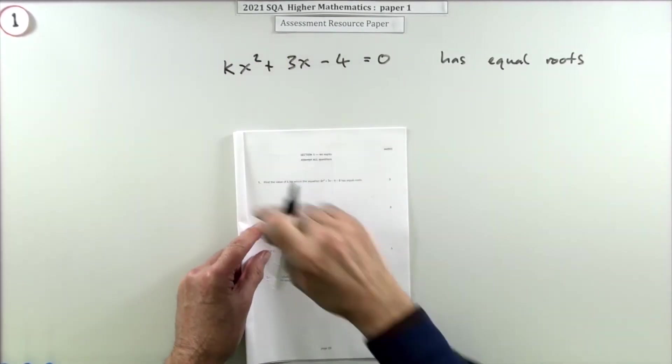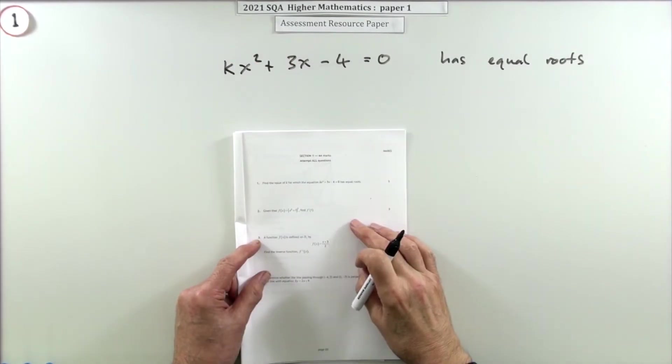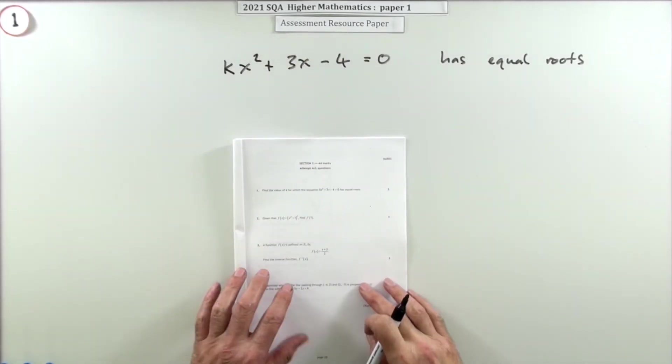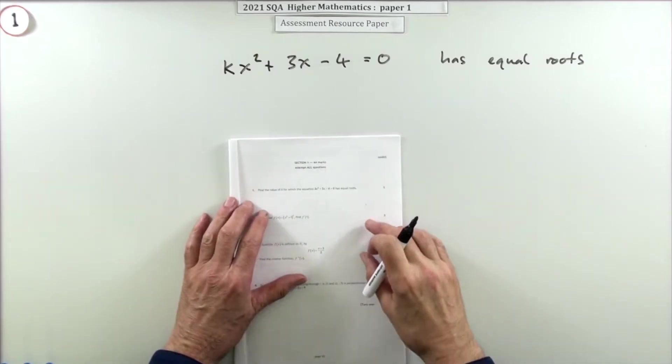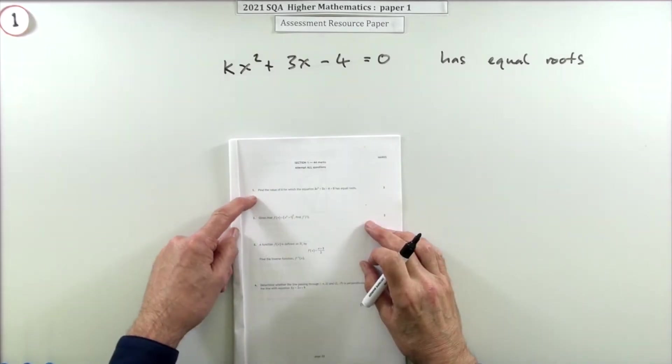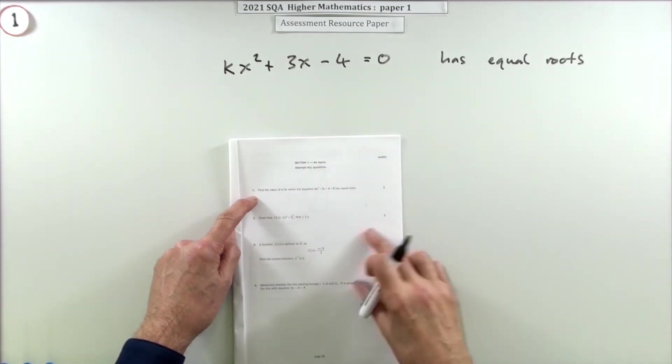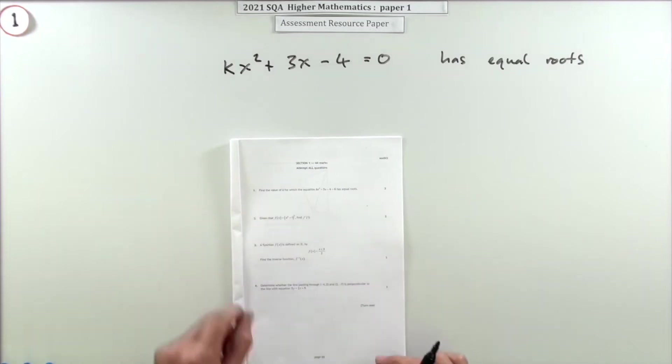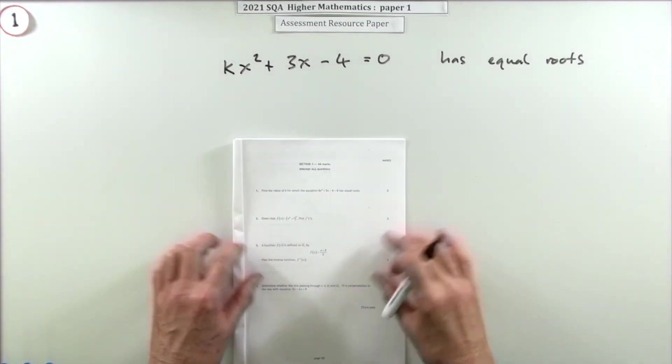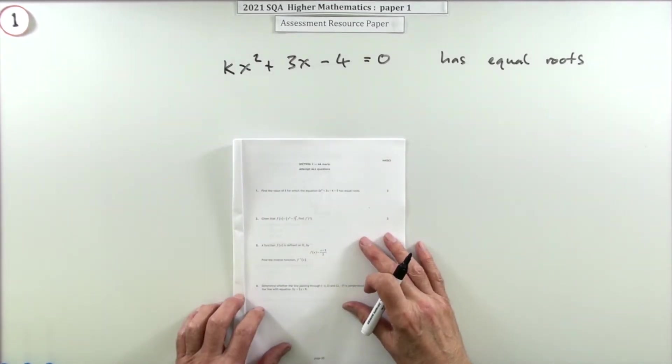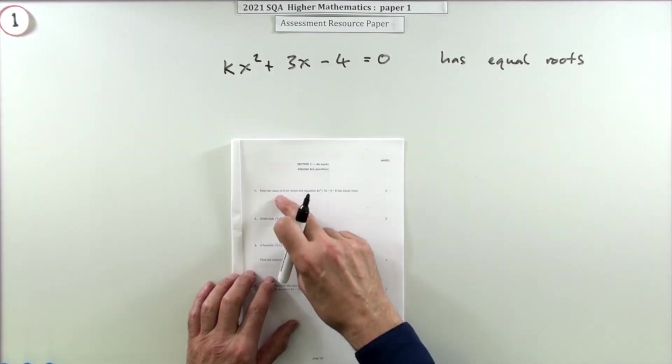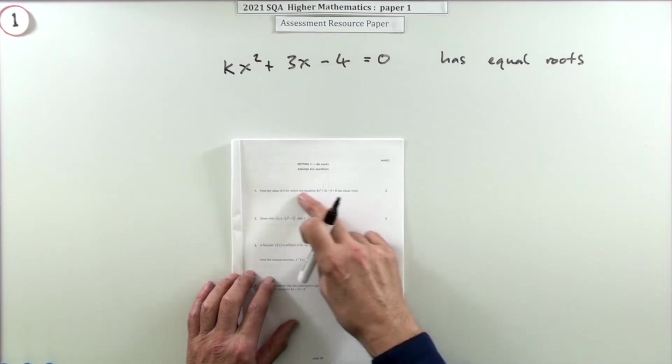So question one then from the 2021 Higher Maths known exam. This is an assessment resource paper that was substituted instead because of the whole COVID carry on. Anyway, format's more or less the same, apart from there's a selection of questions at the end - a section A and a section B - because with all the various restrictions and things you couldn't cover the full content, I am presuming.